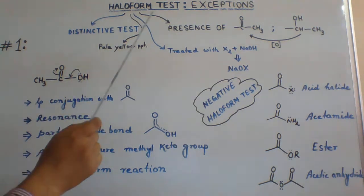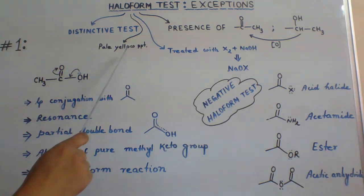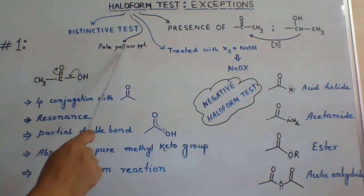The final product of Haloform test is haloform which is pale yellow precipitate. Haloform here may be iodoform, chloroform, or bromoform.